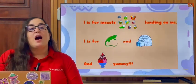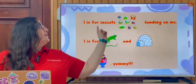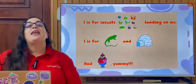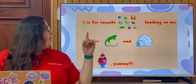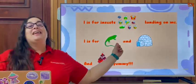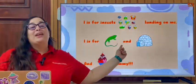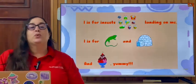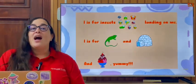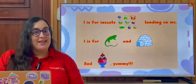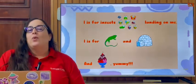Now let's read the poem. I is for insects, I is for insects, landing on me, landing on me. I is for Iguana, I is for Iguana, and igloo, Iguana and igloo, and ice cream yummy, and ice cream yummy.